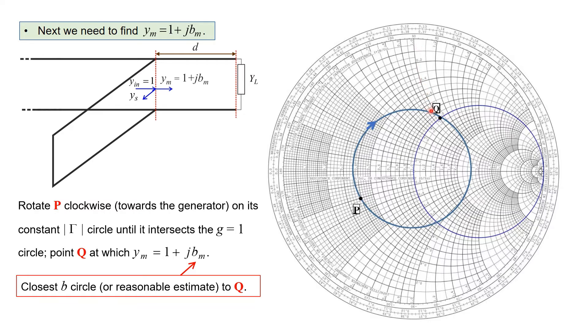There are actually two solutions here. You could also use the second intersection point further around the chart, but that corresponds to a greater physical distance along a real transmission line. So we use the closer solution.